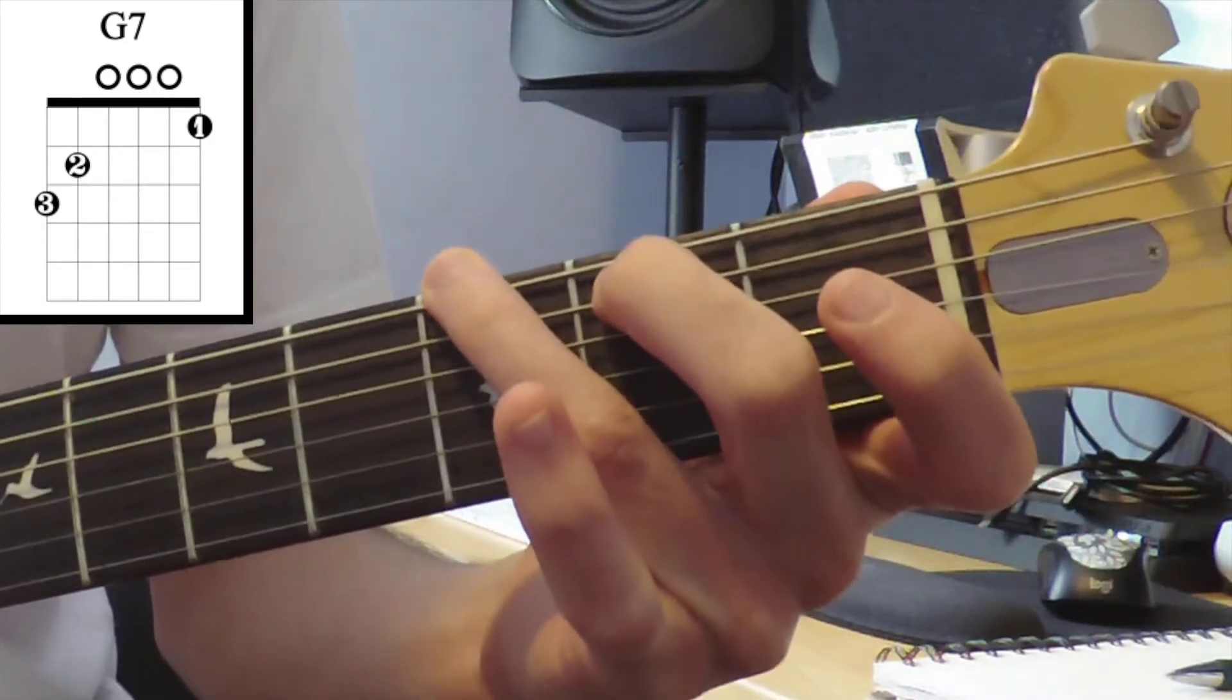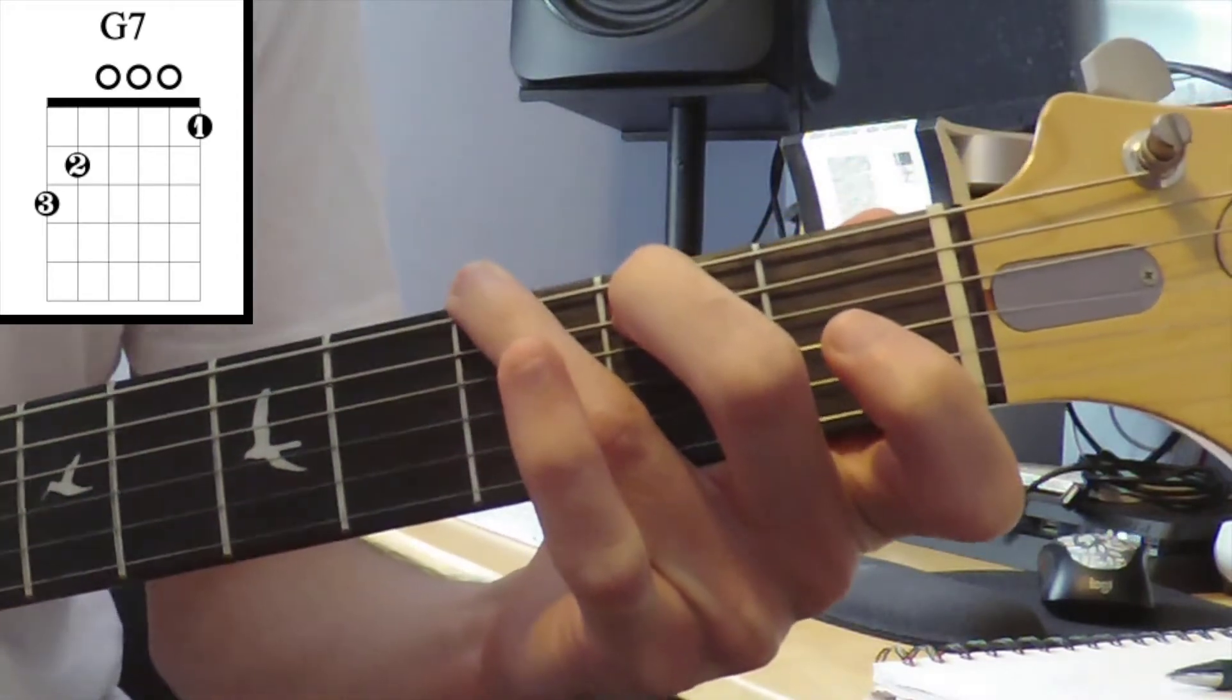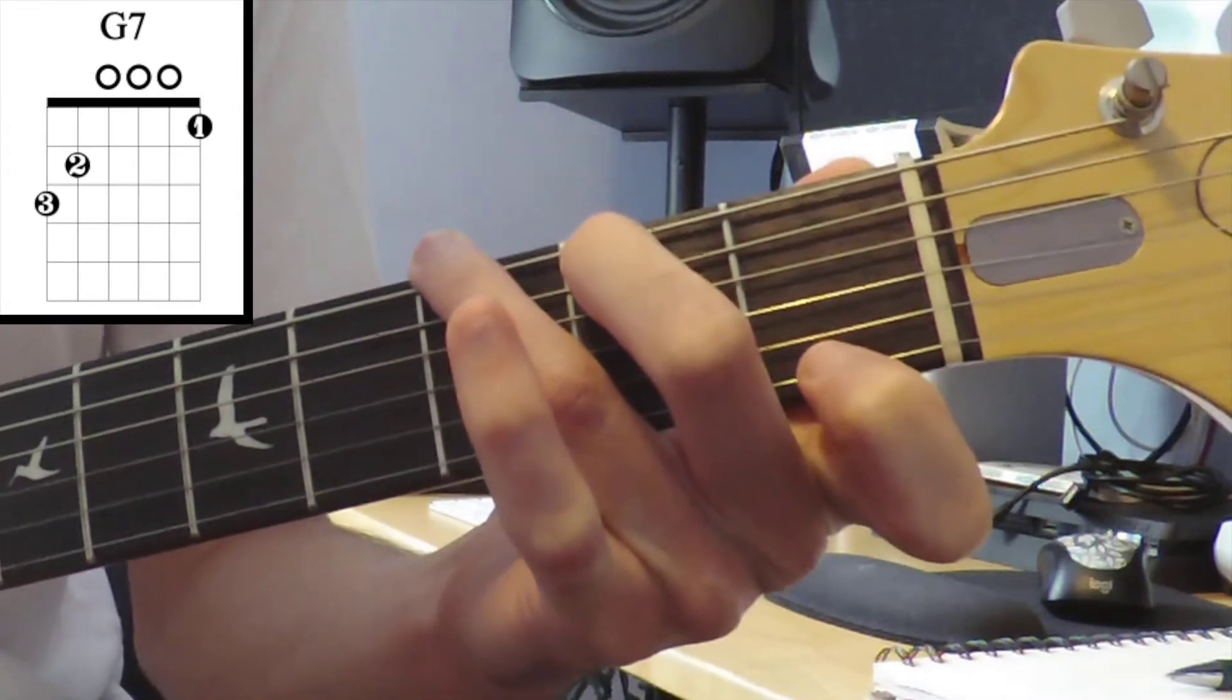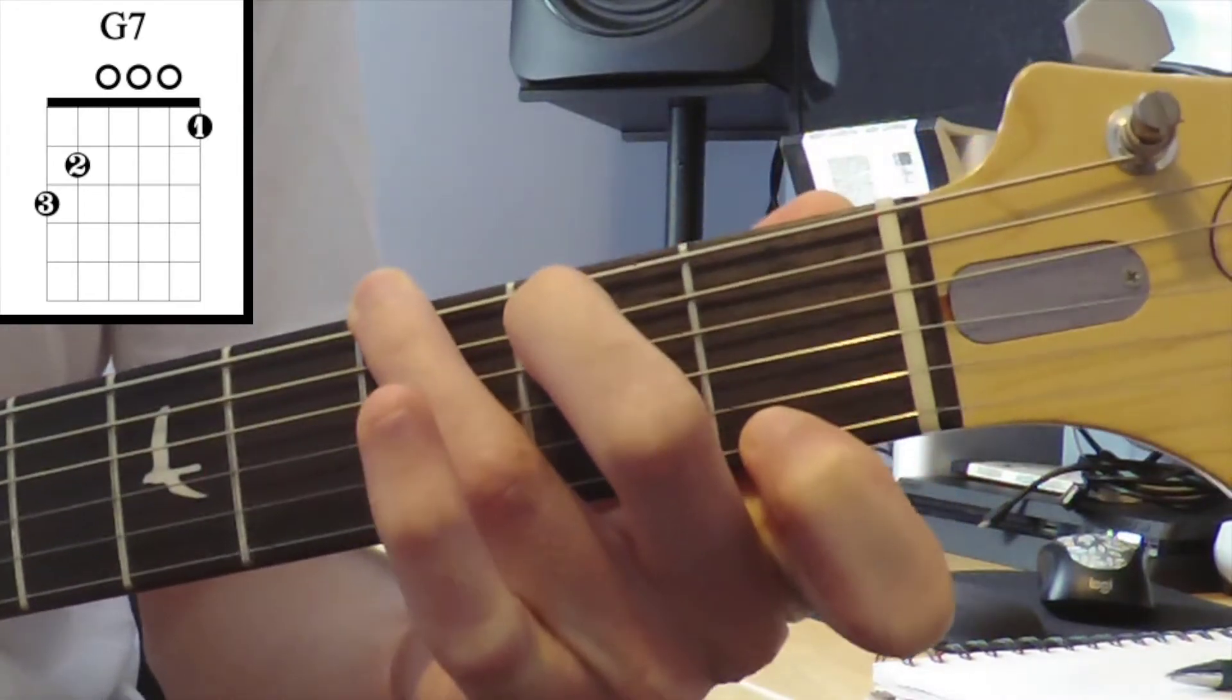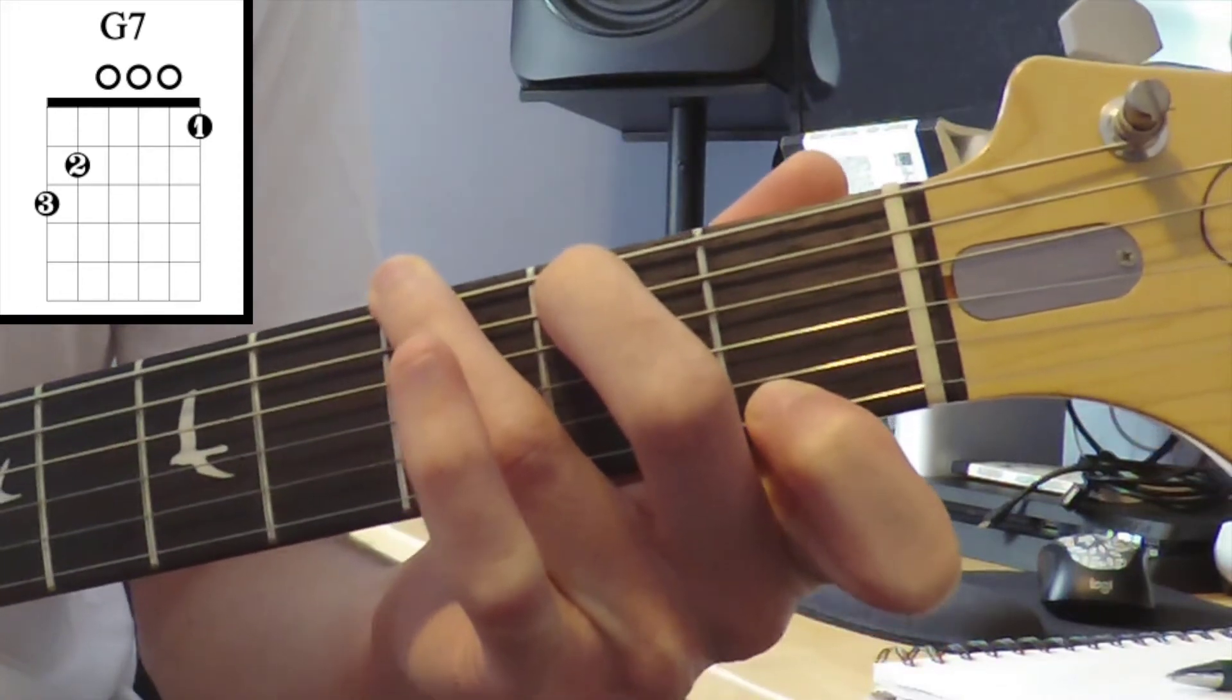Middle finger is gonna go on the second fret of the A string. I have open D, open G, open B, and our first finger is gonna go on the high E string. It should sound a little wonky. Usually these seven chords will sound a little wonky.